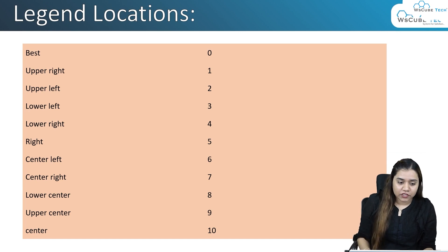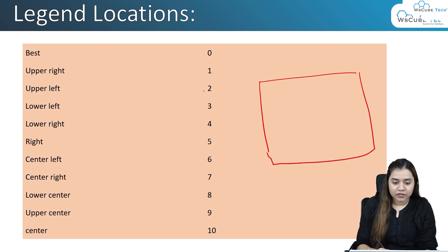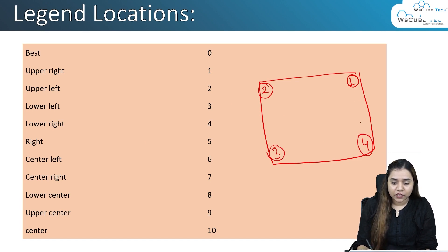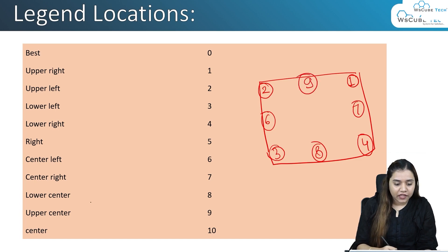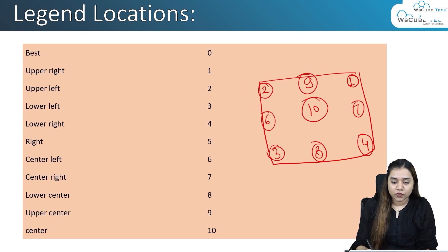Before moving to Jupyter Notebook, let's look at the different locations where legends can be placed. There's a table showing the different location values. Value 0 gives the best suitable location; 1 is upper right, 2 is upper left, 3 is lower left, 4 is lower right, 5 is right, 6 is center left, 7 is center right, 8 is lower center, 9 is upper center, and 10 places the legend in the center of the graph.